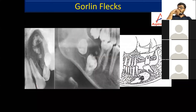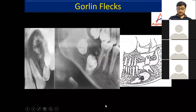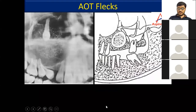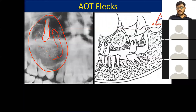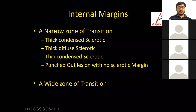Gorlin flecks are seen in the Gorlin cyst, that is CEOC (calcifying odontogenic cyst). The AOT flecks are seen when an impacted canine is associated with surrounding radiolucency and radioopaque flecks — this is diagnostic of AOT (adenomatoid odontogenic tumor). These are the key patterns of tumor mineralization.